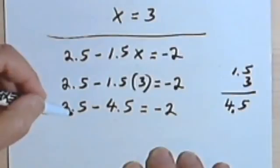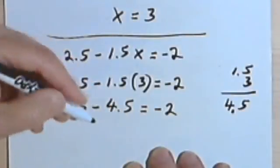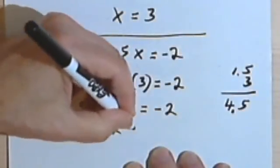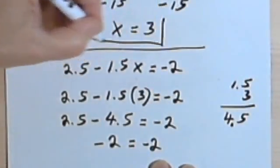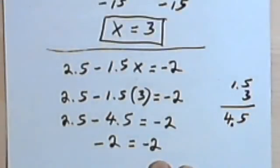Subtracting 2.5 minus 4.5 gives me a negative 2. So negative 2 equals negative 2. And I get x equals 3.